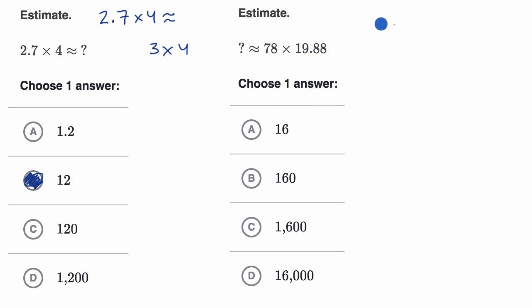All right, this is the same idea. We want to think about what numbers these are close to that are easy to multiply with. For example, 78 is pretty close to 80. And 19.88, or 19 and 88 hundredths, that's pretty close to 20.